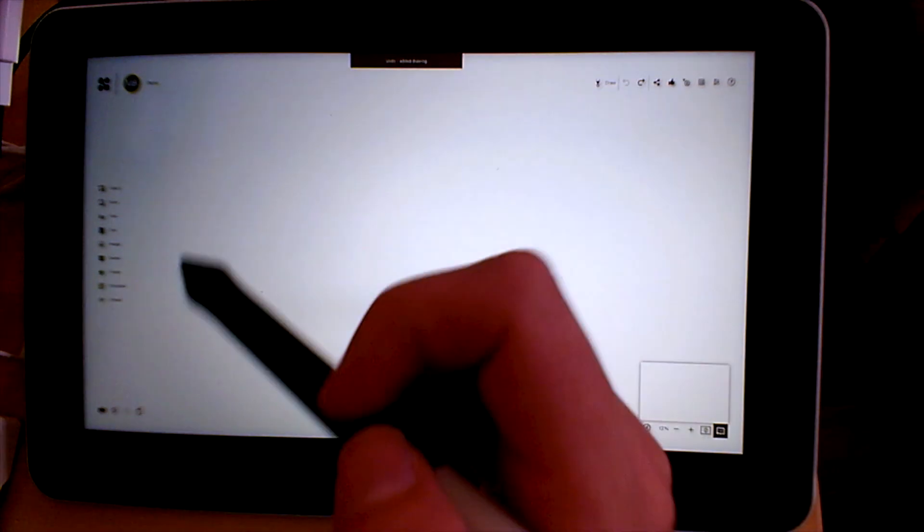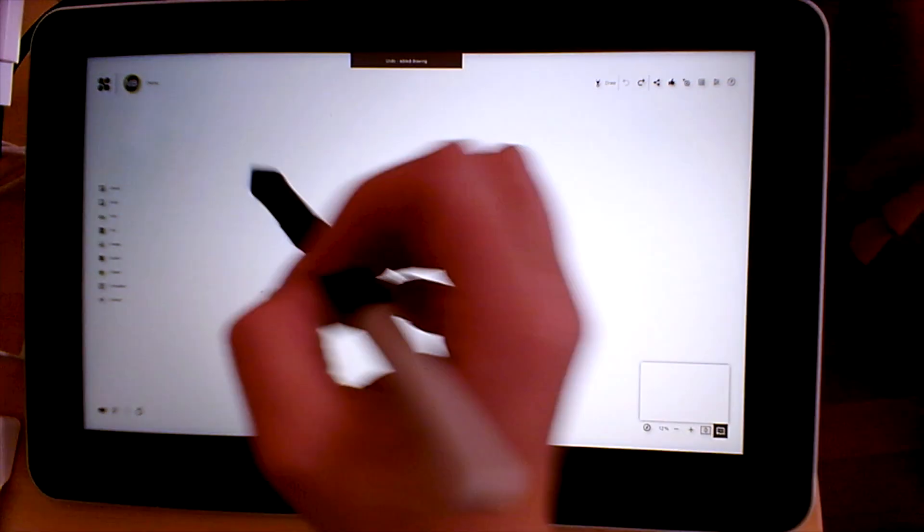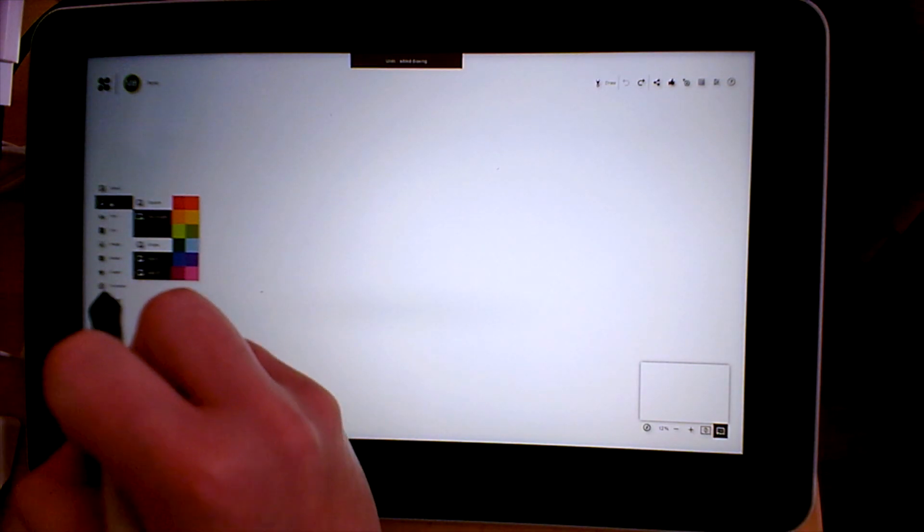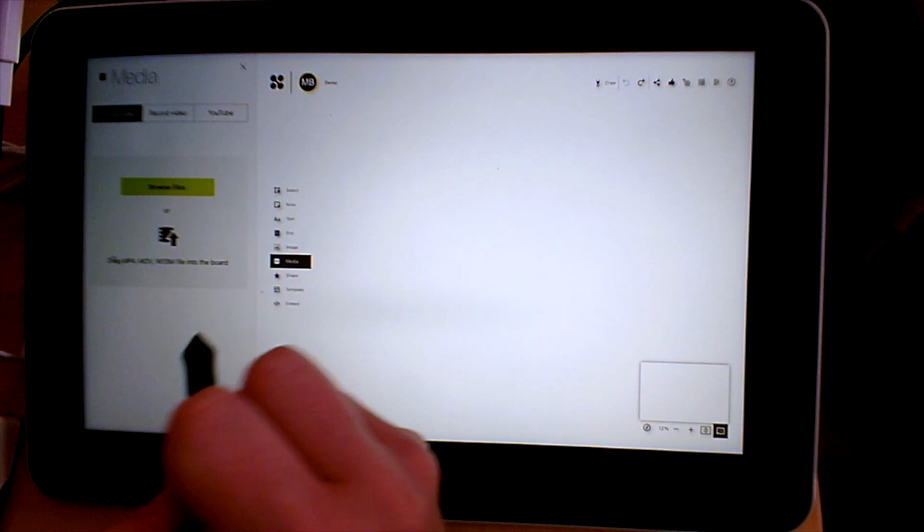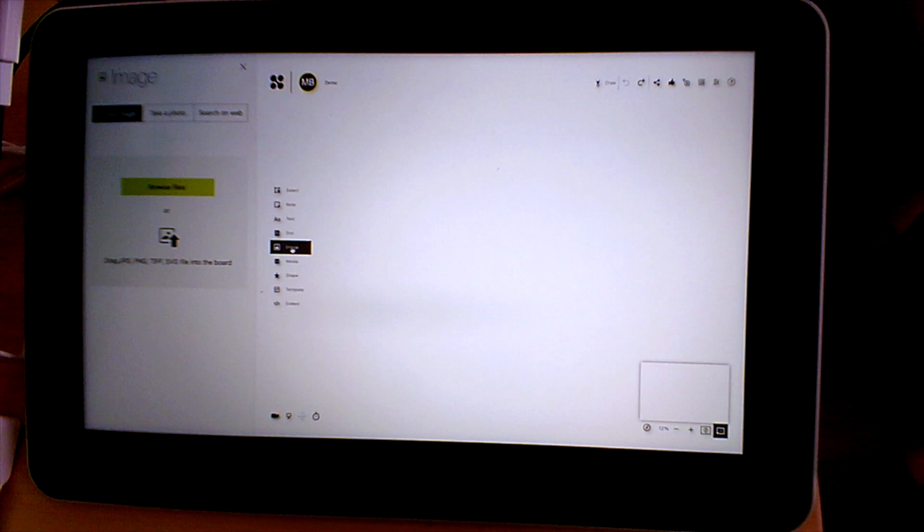Speaking of Collabboard, you might have students use this tool to draw, make a Venn diagram, add different notes to their page, pull in media or an image that they want to add as they're organizing their thinking.